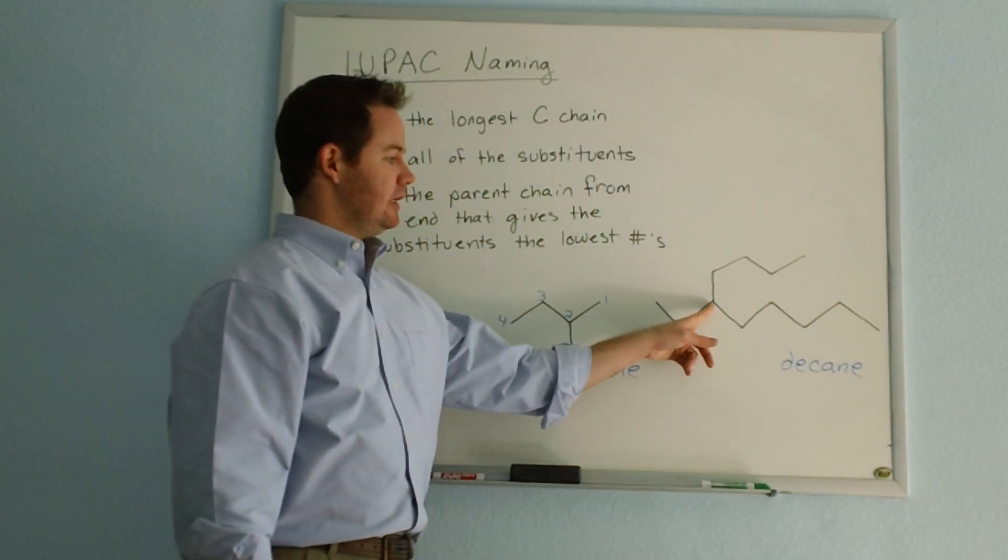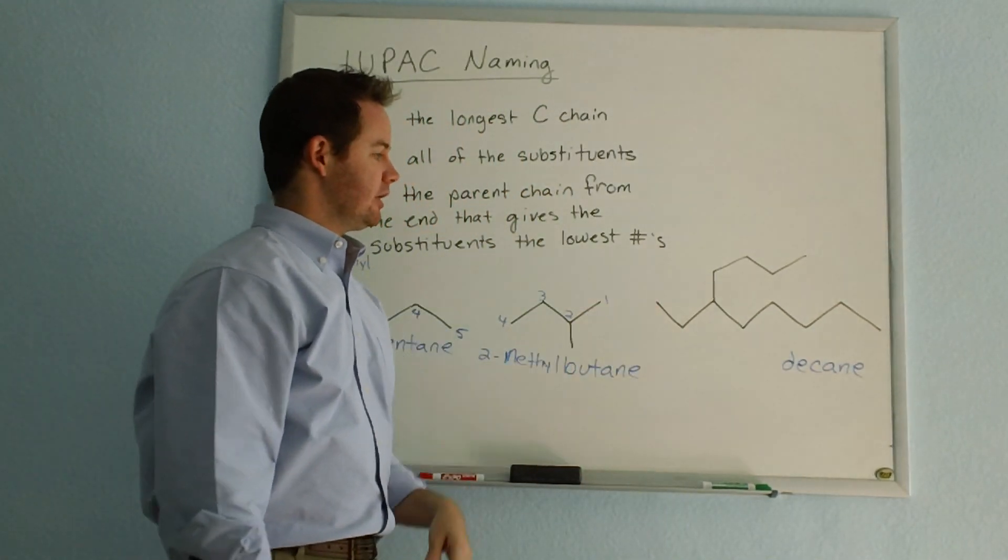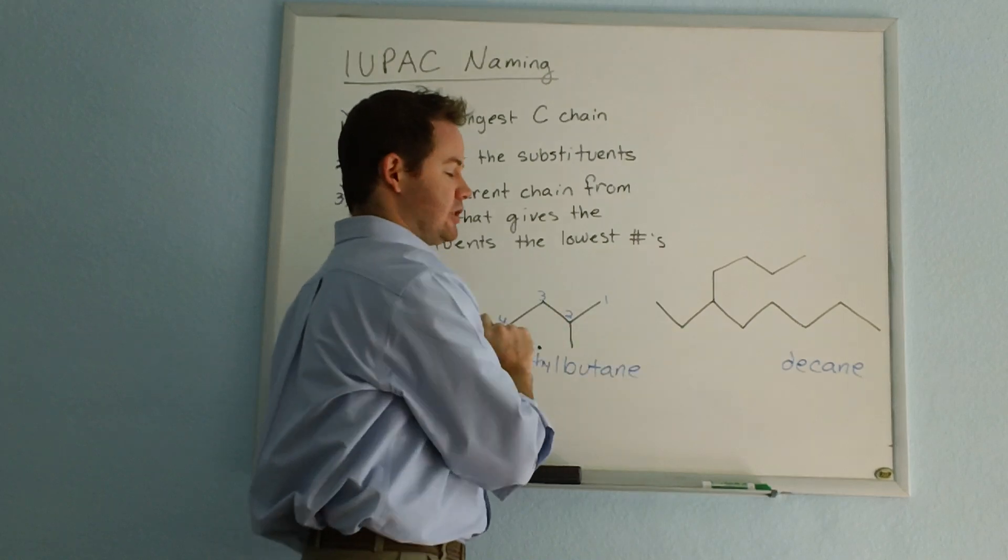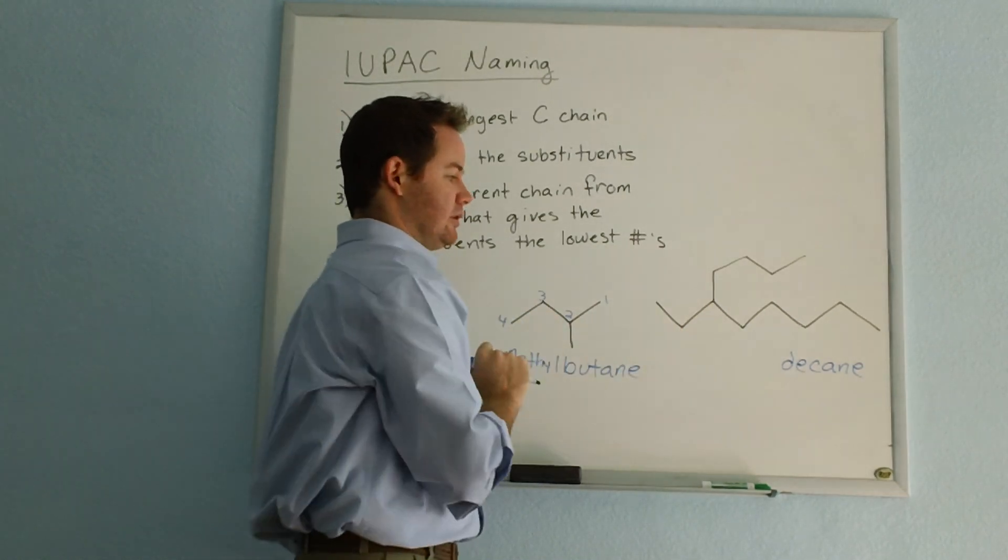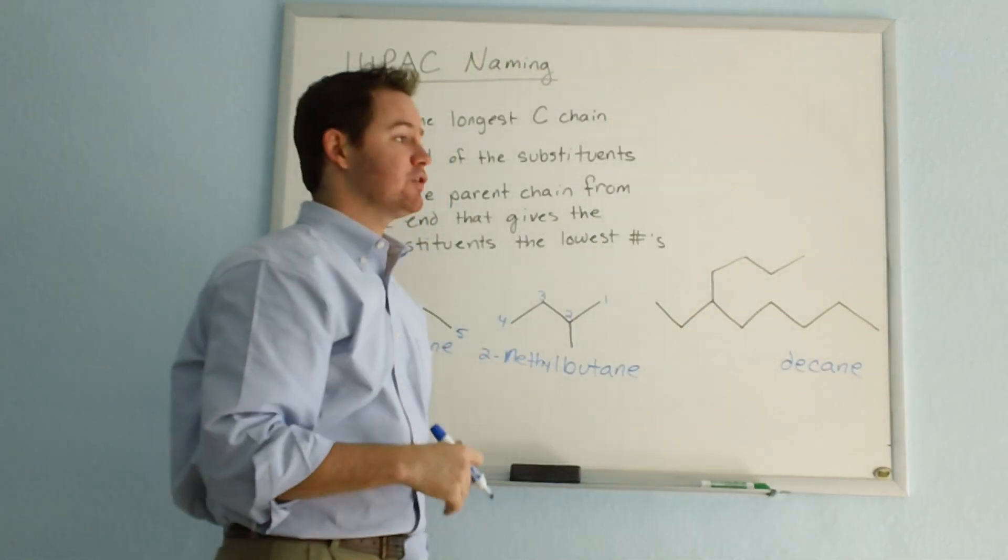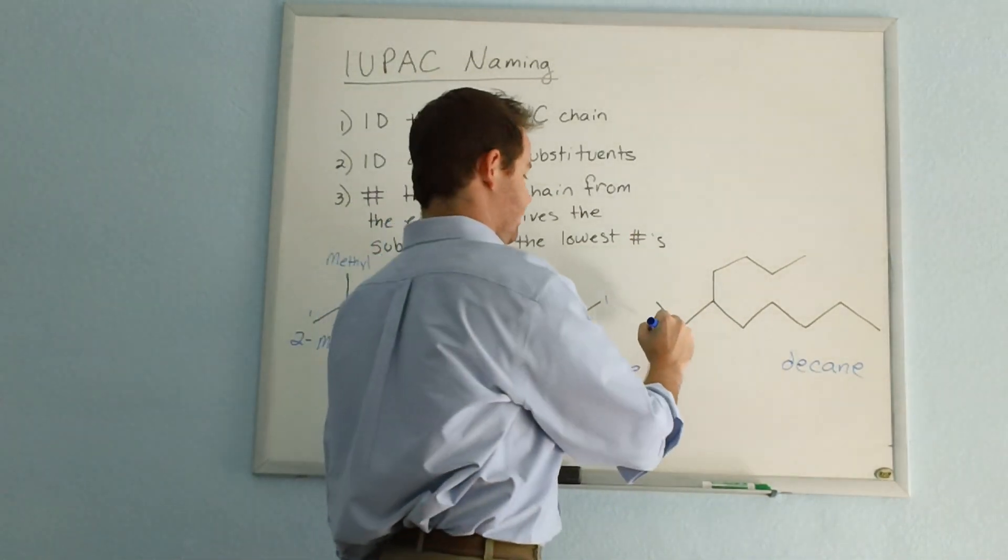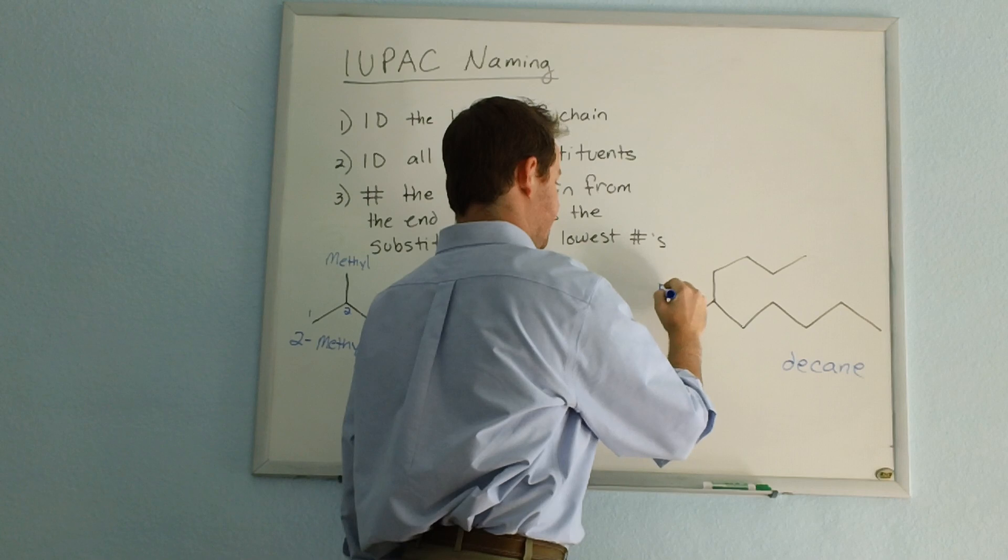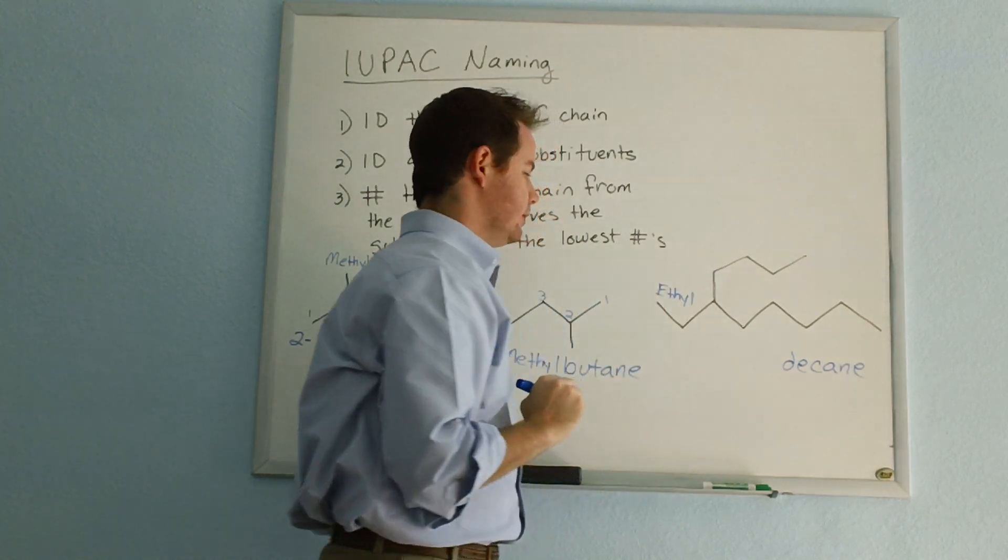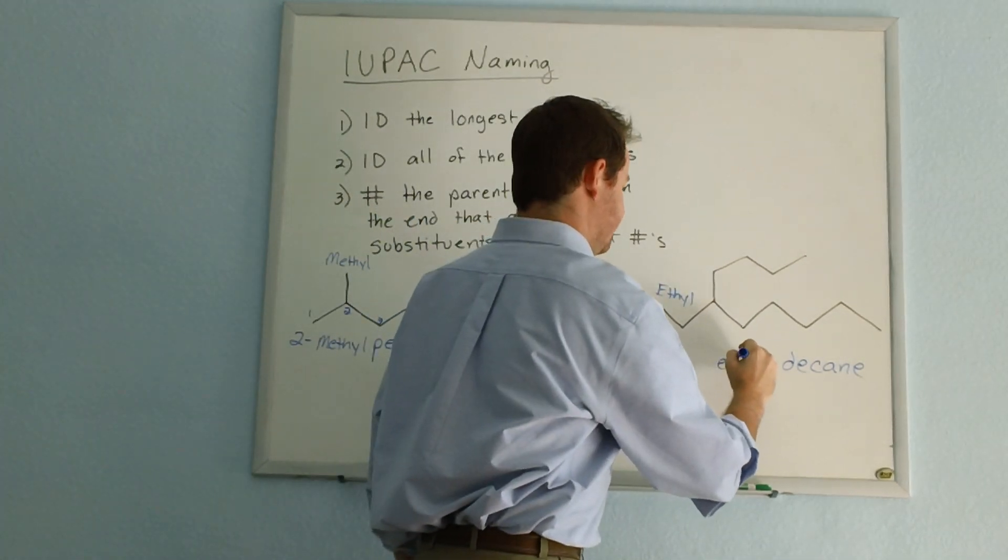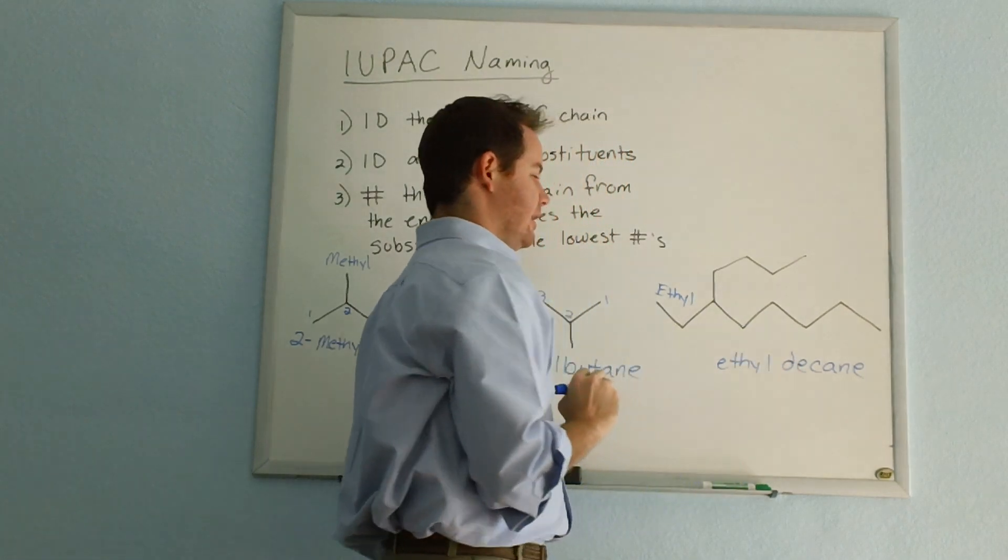Now our branch occurs right here. We're branching off of that carbon. And our substituent that branches off has two carbons in it. So our prefix for two is eth. So this will be an ethyl group. So we're looking at some form of ethyl decane.